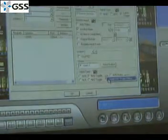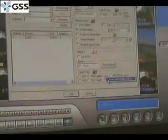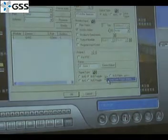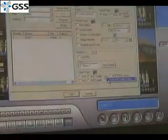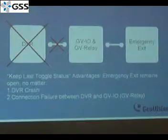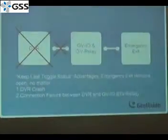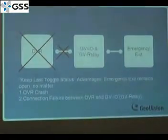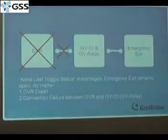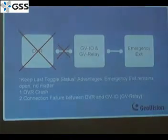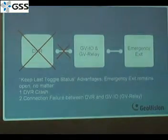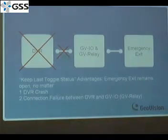In case of emergency, you don't want your emergency exit to lock down. But what if the DVR crashes or the connection fails? When you use keep loss toggle status with our external IO box and relay box, the output state will be kept even if the DVR crashes or the connection between the DVR and IO box fails.